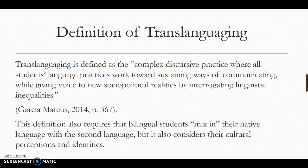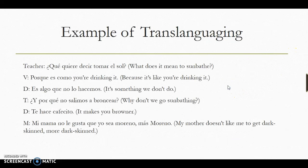Translanguaging is defined as the complex discursive practice where all students' language practices work toward sustaining ways of communicating while giving voice to new sociopolitical realities by interrogating linguistic inequalities. This definition also requires that bilingual students mix in their native language with the second language. An example of translanguaging can be seen in the dialogue below.